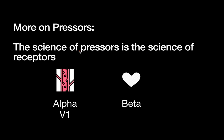A bit more on the science of pressors — which is really the science of receptors. Think back to those components you can manage: the heart, the vasculature, and blood volume. Blood volume is managed via resuscitation with isotonic fluids or blood products. When talking about pressors, you're talking about medications that influence the vasculature and the heart. For the vasculature, think alpha receptors and V1 receptors; for the heart, think beta receptors.